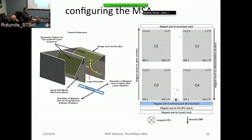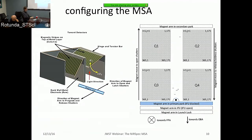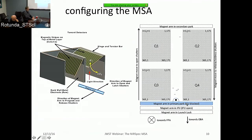The MSA is configured using a movable magnet arm. Software on the ground creates the configuration specifying which shutters should be opened, and that information is uploaded to the spacecraft. Voltages are applied to the entire array, the magnet arm sweeps from the primary park position upward opening all shutters, and then only the shutters intended to remain open are kept with voltage. The arm sweeps back, closing all the others, leaving only the observation shutters open.